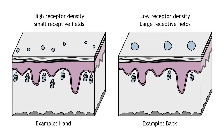Receptive field sizes vary even within one receptor type. For example, with Meissner corpuscles, receptive fields in regions like the fingers or lips are smaller than in regions like the back or leg. This allows us to have finer spatial resolution when locating and identifying objects using our fingers. The smaller receptive fields in these regions are a result of higher density of receptors in the skin.